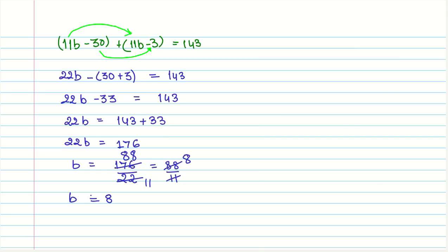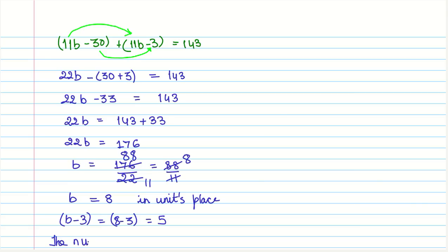B equals 8 is our digit in the units place. The digit in the tens place is B minus 3, which is 8 minus 3, equal to 5. Therefore the original number is 10 times 5 plus 8, which equals 58.